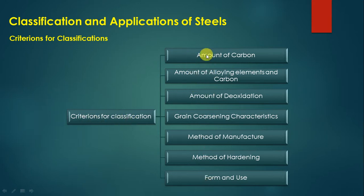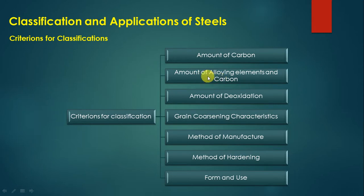The first criterion is the amount of carbon — steels are categorized depending on the percentage of carbon present. The second criterion is the amount of alloying elements and carbon percentage. The percentage of manganese, chromium, phosphorus, sulfur, and many more alloying elements describe the type of steel.